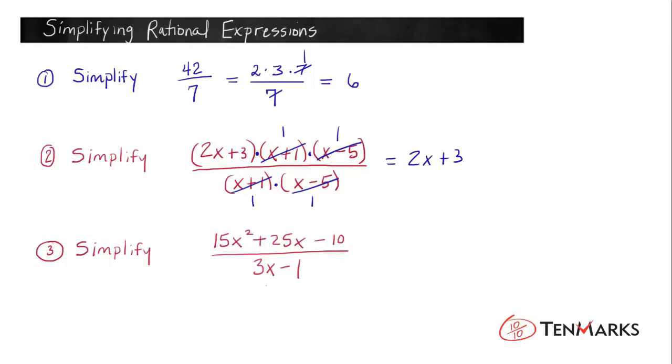But it's usually easier to factor and do some reducing if possible. So let's try that. First, for the numerator, we see 15 and 25 and minus 10 all have a common factor of 5.